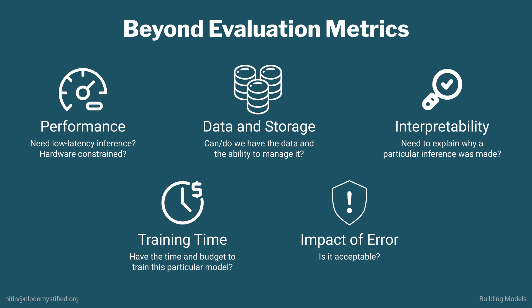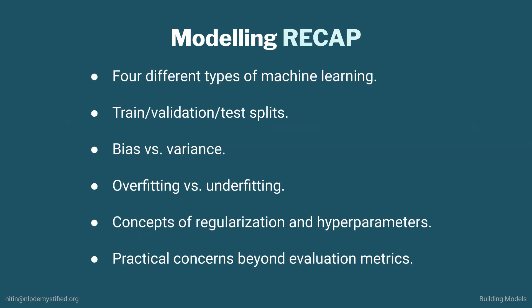These are a bunch of practical concerns beyond evaluation metrics and it's important to keep them in mind. So that's the modeling process at a high level. We briefly went over the different types of ML, splitting data into train, validation, and test sets, what it means to have high and low bias and variance, how overfitting and underfitting can occur and how to deal with them, and we were introduced to the concepts of regularization and hyperparameters and looked at practical concerns beyond evaluation metrics. Depending on your level of familiarity with the subject, that may have just been a refresher or a lot to take in. We also didn't cover things like initial data exploration, but the important thing right now is to have a general sense of the flow and we'll put all this into practice when we demo individual models, evaluation metrics, and regularization techniques throughout the course. For now, I encourage you to look at the additional resources links and I'll see you in the next video where we'll start putting everything we've discussed so far into practice.